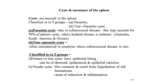Cysts are unusual in the spleen, classified into two groups: parasitic and non-parasitic cysts. Parasitic cysts are due to echinococcal disease. This type accounts for 70% of splenic cysts where hydatid cyst is endemic, found in Australia, South America, and Greece.